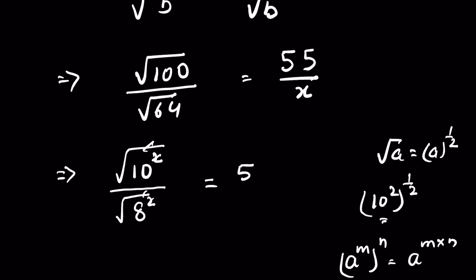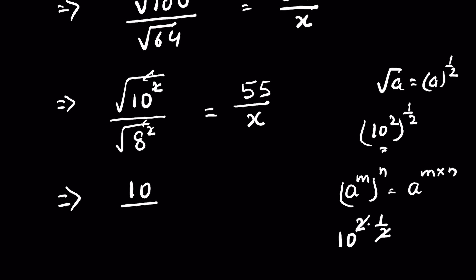That's why we have cancelled the square root. 10 upon 8 is equal to 55 upon x.